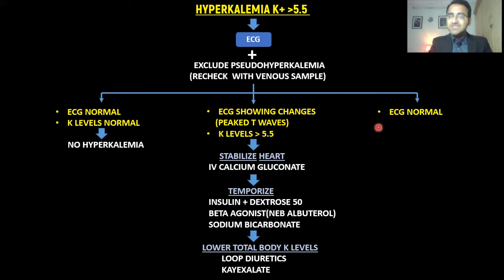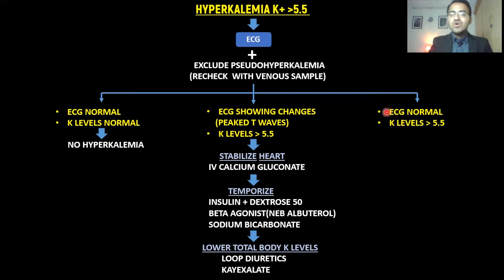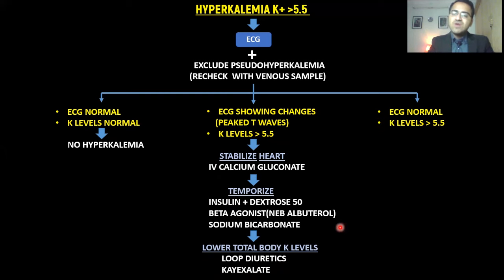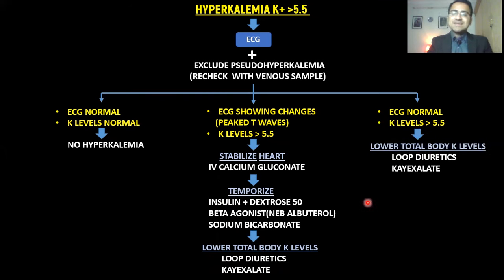In a patient where ECG is normal but potassium levels are still high — confirmed by a second sample — the heart is not yet affected. This patient does not need calcium gluconate or acute temporization. All that is required is to slowly and gradually lower total body potassium by giving loop diuretics and K-exalate.